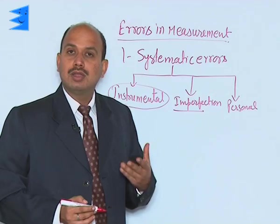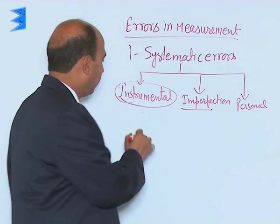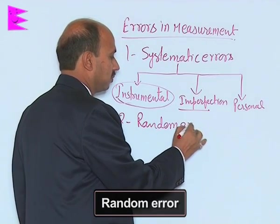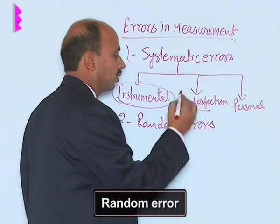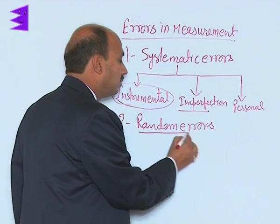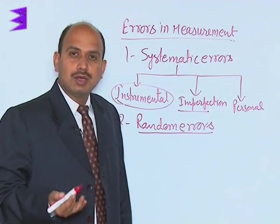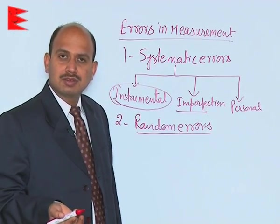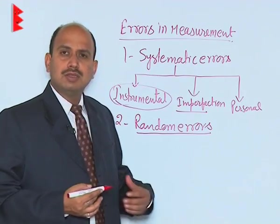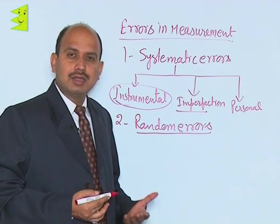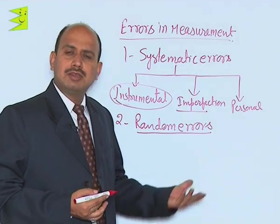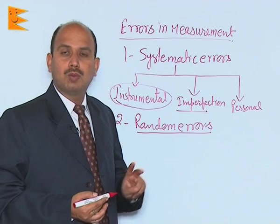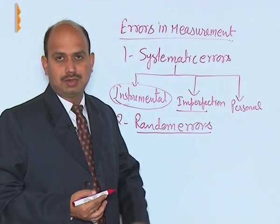Personal error arises when you are not setting the instrument properly, not taking care of all factors while measuring, or not positioning your eyes correctly when looking at the scale readings. The second type of error is random error. Random errors occur irregularly and are random with respect to sign and size — you do not know the actual reason why readings come out differently at different times. Random errors may be positive or negative.